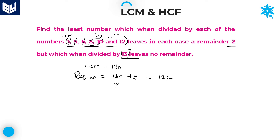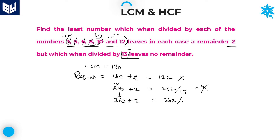Go with the second multiple of 120, which is 240. 240 plus 2 is 242. Check whether 242 is divisible by 13. Dividing: 13 goes once giving remainder 112, and 112 is not divisible by 13. Therefore this is not your answer. Go with the third multiple: 360 plus 2 is 362. 362 divided by 13 — 13 twos are 26, so this is also not your answer.